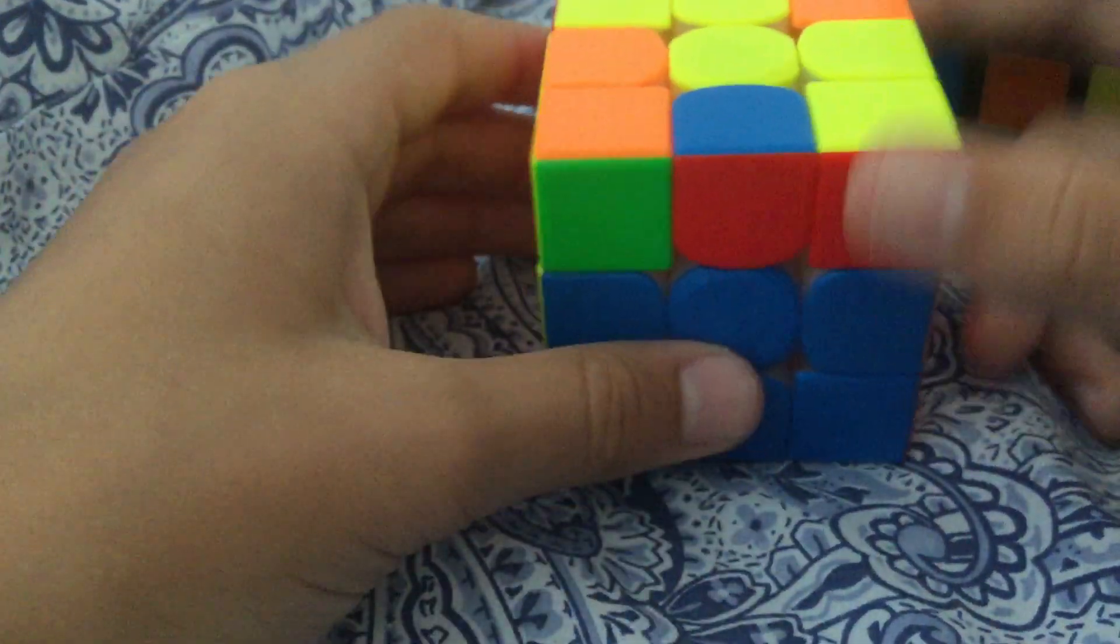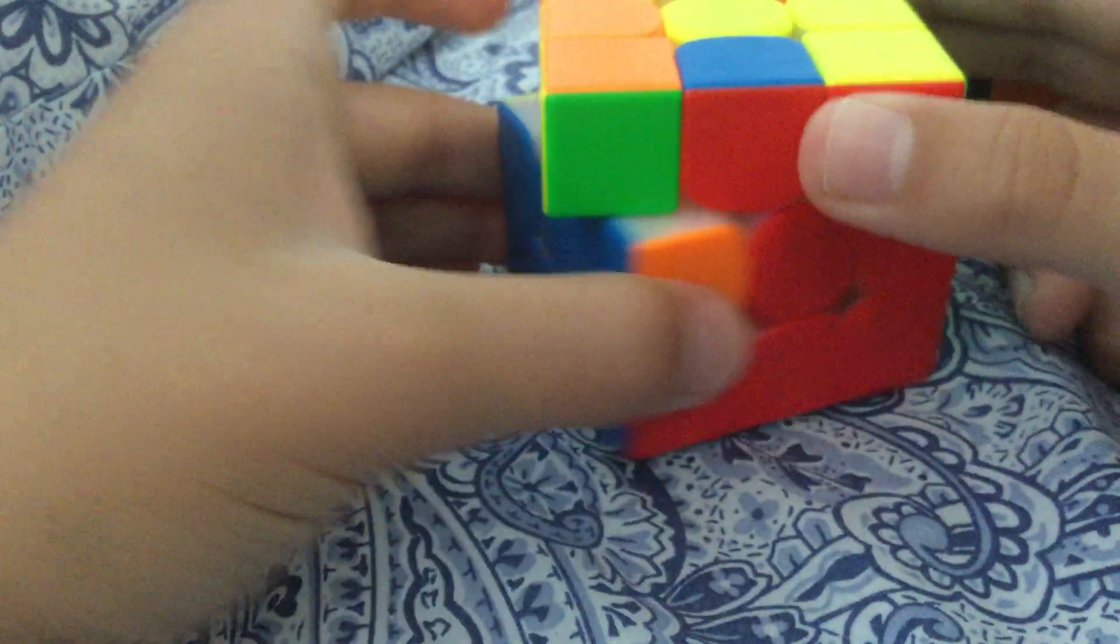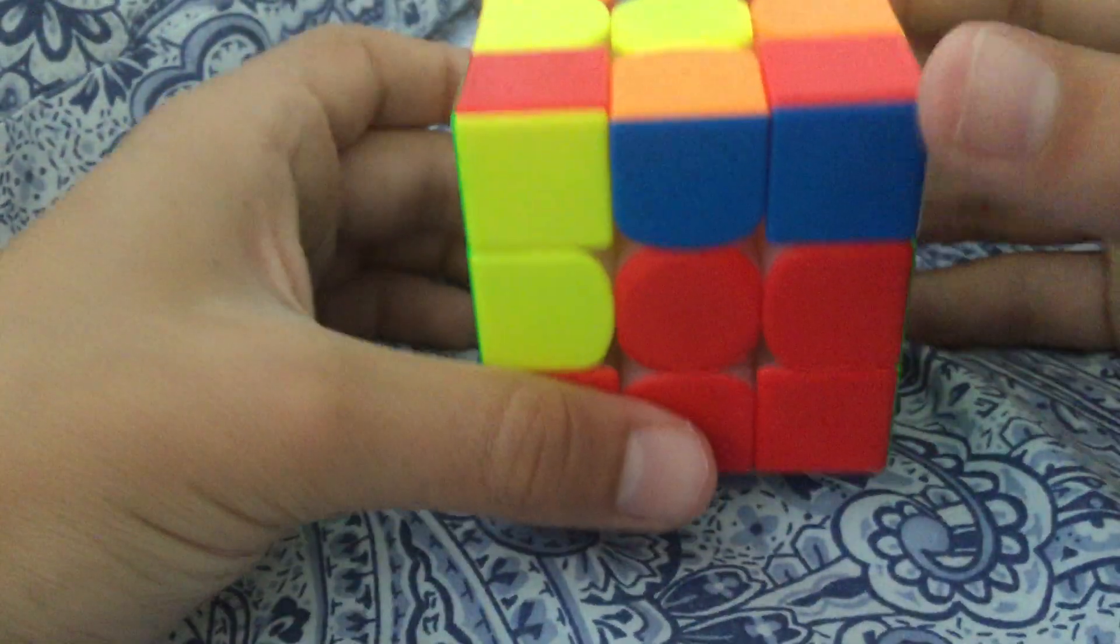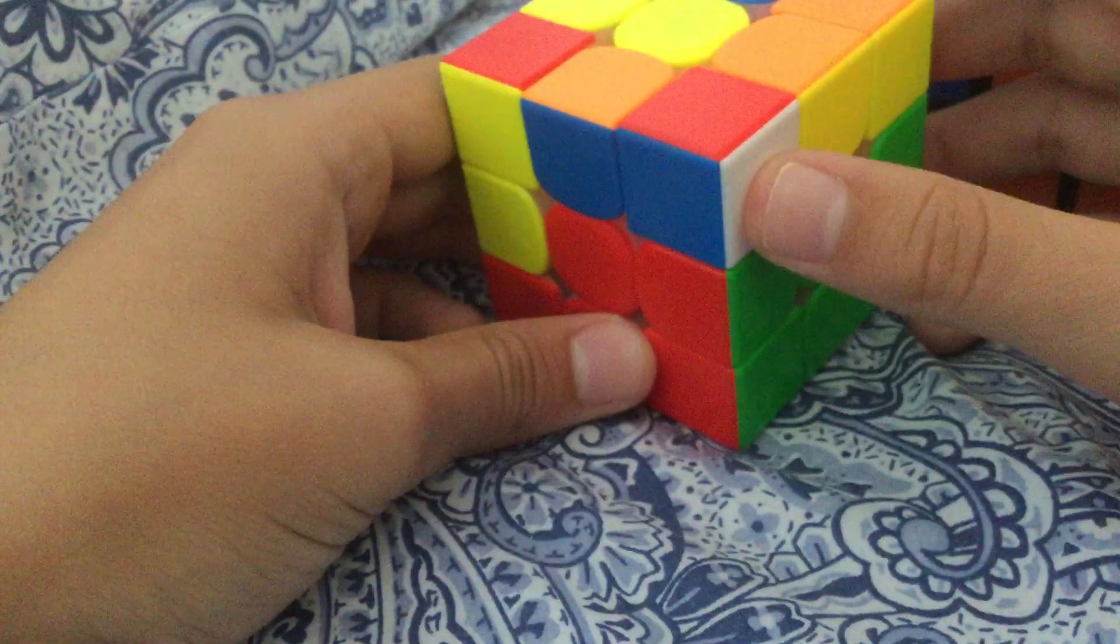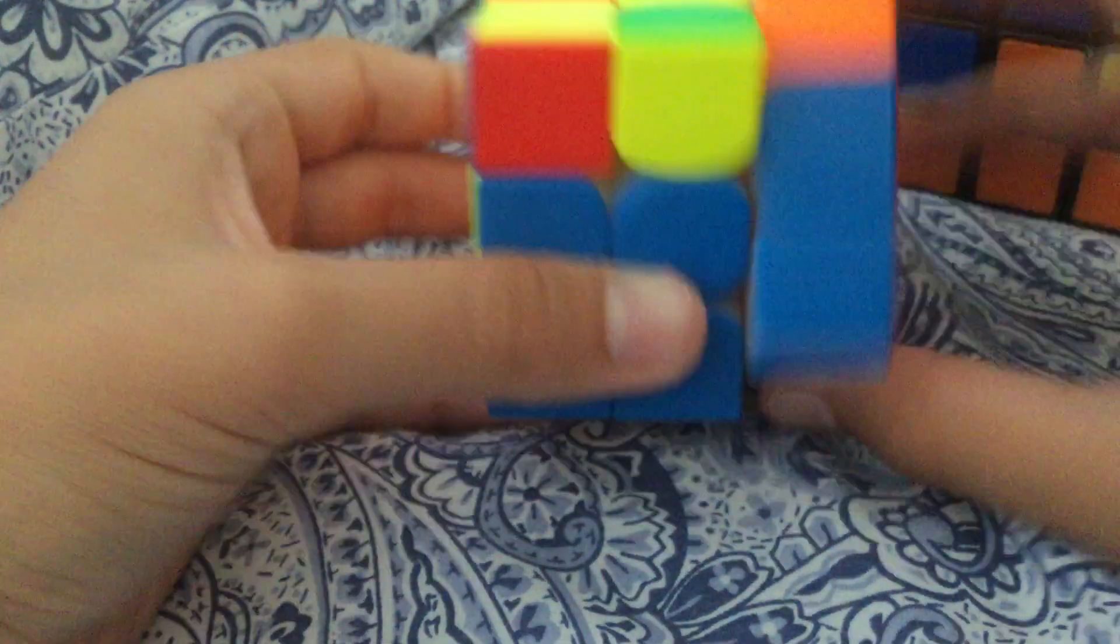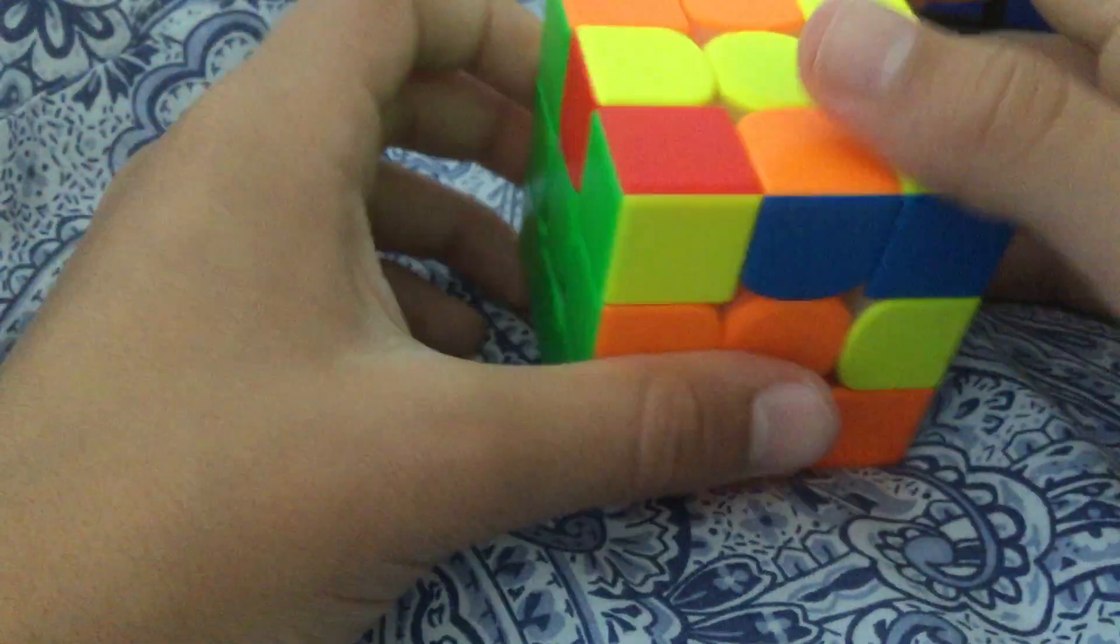And we're gonna do that here, blue and red. Match the red with its center, blue connects to here. Face it away from the color, L' U' L. White here next to the blue, match it with the center, R U' R', and we got one here.